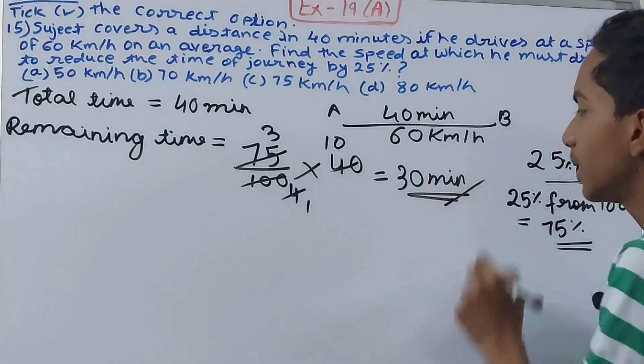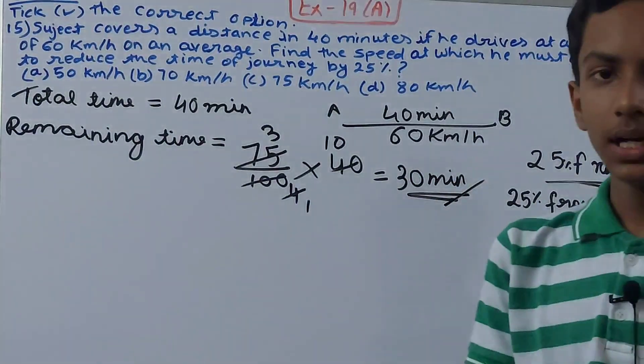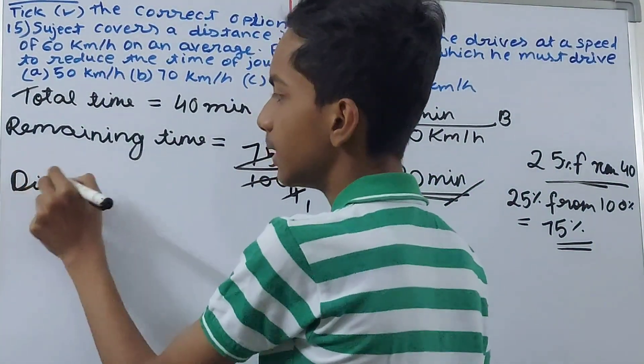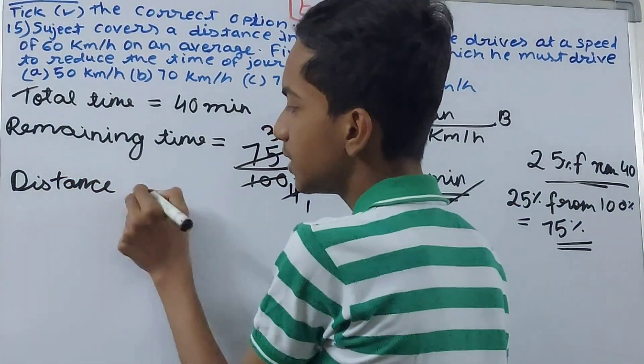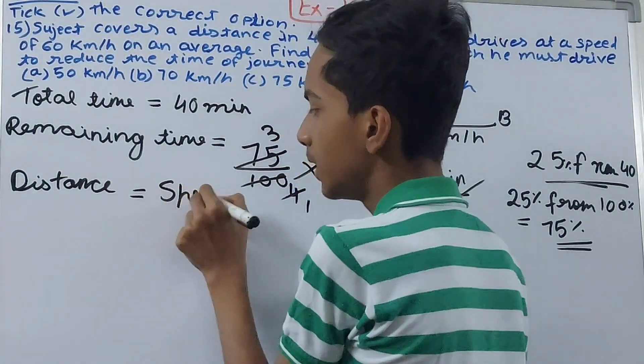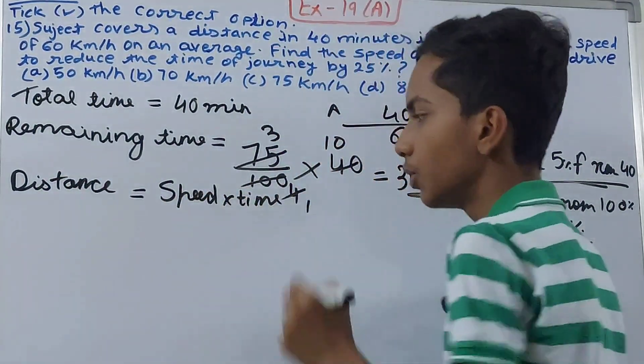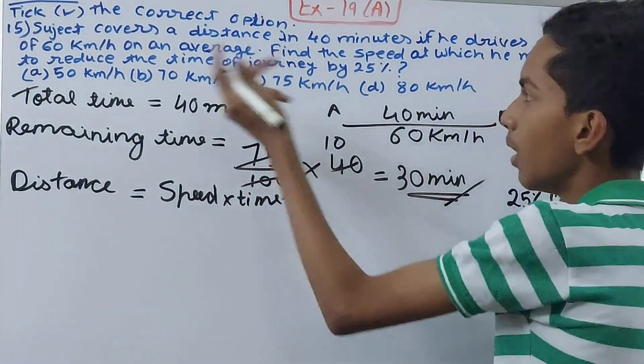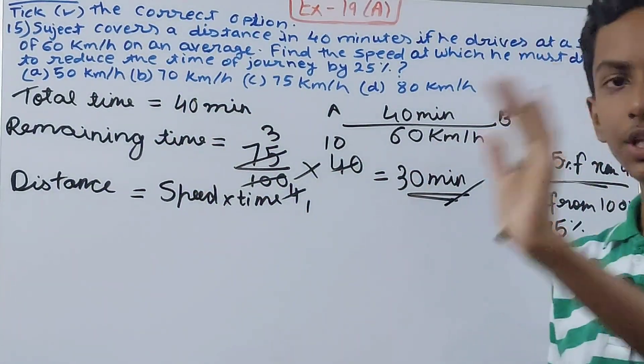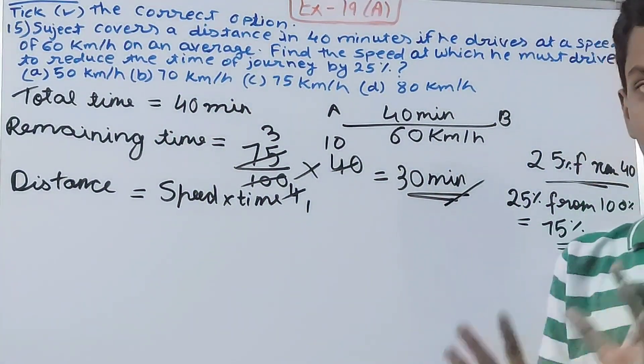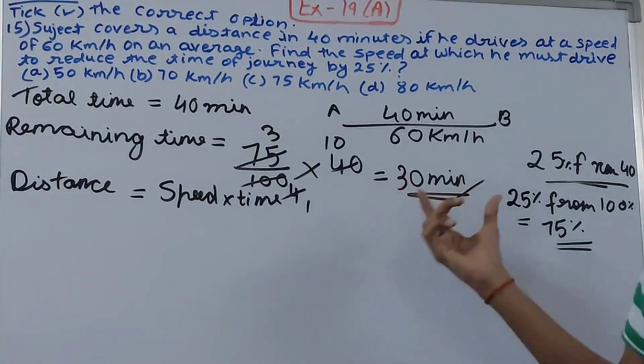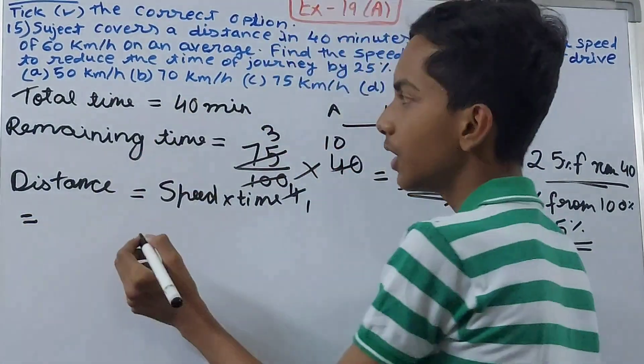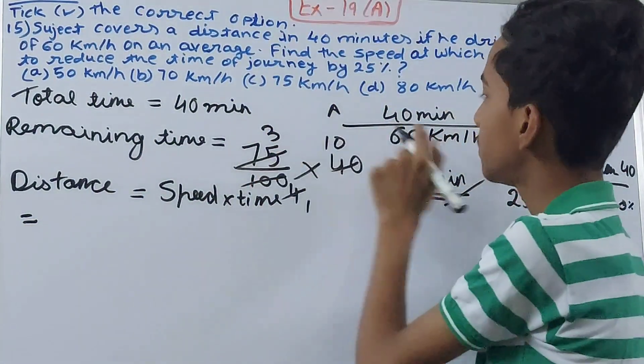We know the time now, we need to know the distance as well. So distance equals speed into time. Now which time will we input, this one or the 40 minutes? We will go back to the initial time that was 40 minutes, because this is the time which we will use for calculating the new speed. In the starting we had 40 minutes and the speed was 60 kilometers per hour.